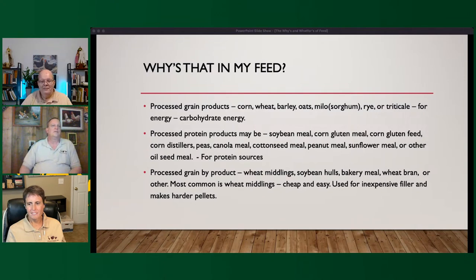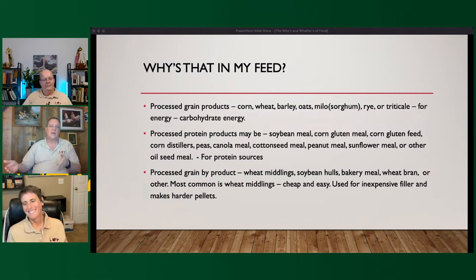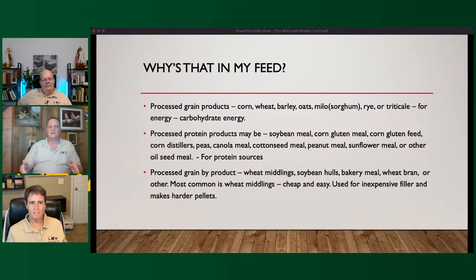Wheat bran is the second layer closer to the heart of the wheat berry, sometimes separated out. The most common grain byproduct is wheat middlings — it's cheap, easy, inexpensive filler. It looks good on paper, but it really isn't. And for all of you who love pellets: you have to have wheat middlings to make a good hard pellet. The harder the pellet, the more wheat middlings are in it — that's the bare-bones truth of how you make a pellet.